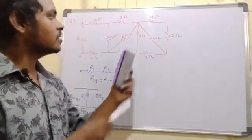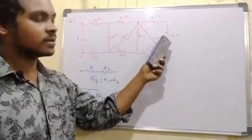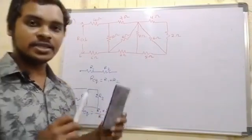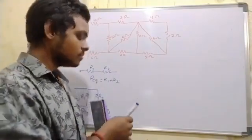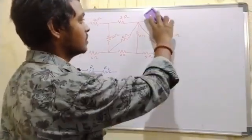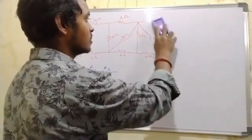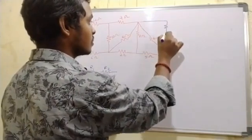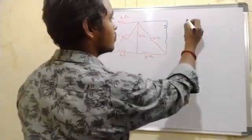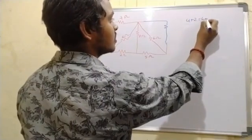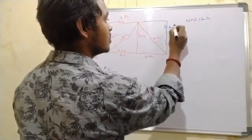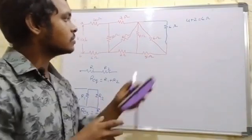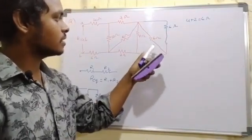We have to observe it. 4 ohms and 2 ohms are in series — 4 ohms is the same. We will add these in series: 4 ohms plus 2 ohms gives 6 ohms. We have 6 ohms and 6 ohms in parallel.